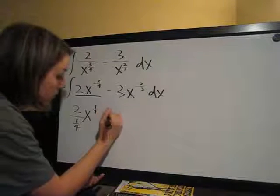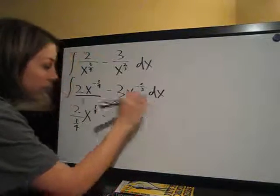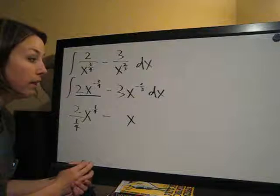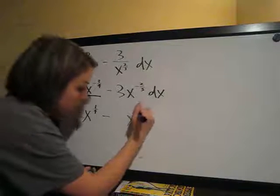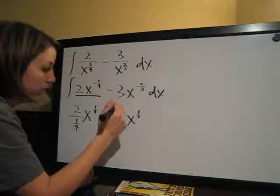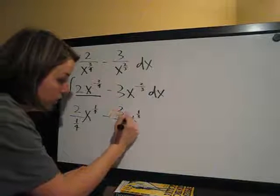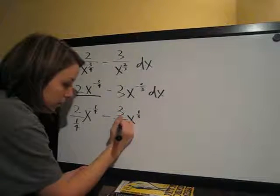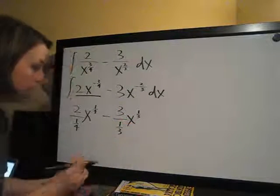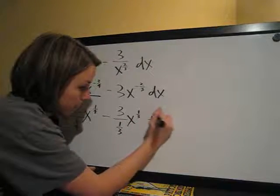Then we're going to do the next term. Write the x. Negative 2 thirds plus 1 is positive 1 third. And then 3, the coefficient, over the new exponent, 1 third, plus c to account for the constant.